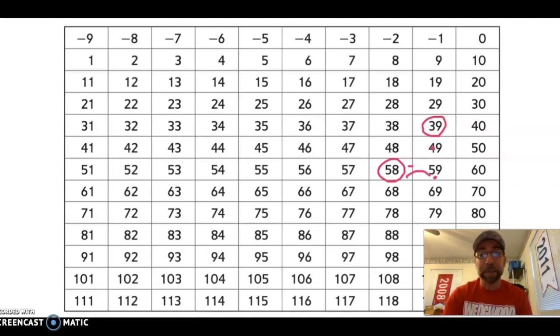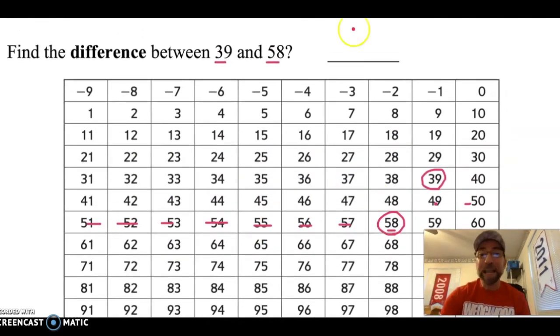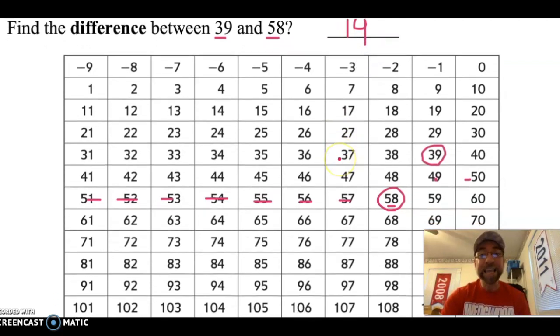Now, some students don't like to pass the number. I'll show you how this is. They'll go 10 and they won't go past the number because they like to just count up. 10, 11, 12, 13, 14, 15, 16, 17, 18, 19. So my answer is 19. Either way, I get the same answer. So you want to find the strategy that works for you.